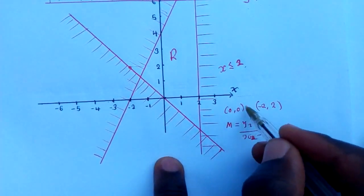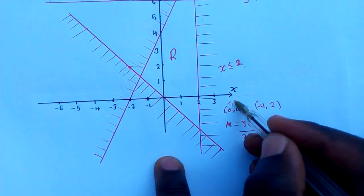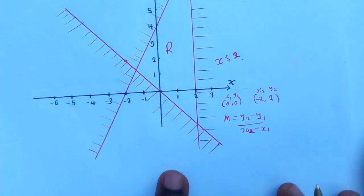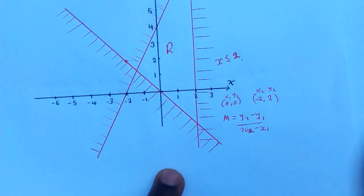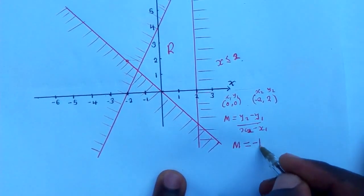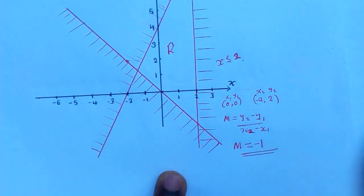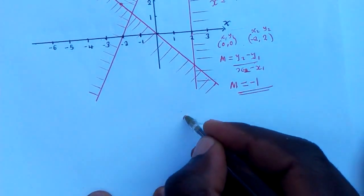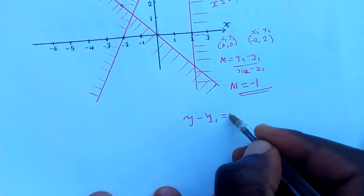You pick which coordinate is (x₁, y₁) and which is (x₂, y₂). When you plug in and solve, you get the gradient m is equal to negative 1. Once you get that gradient you can use the formula for finding the equation of the line.